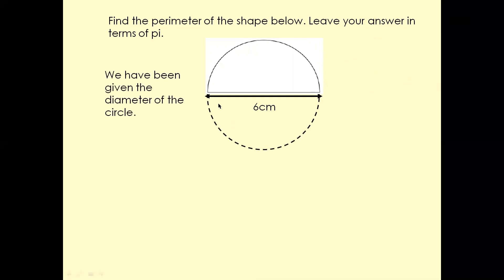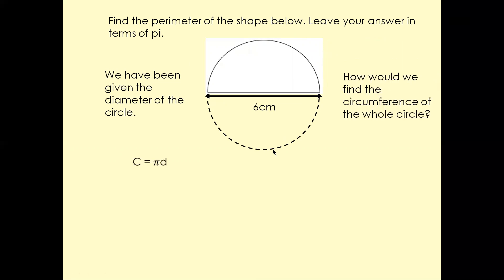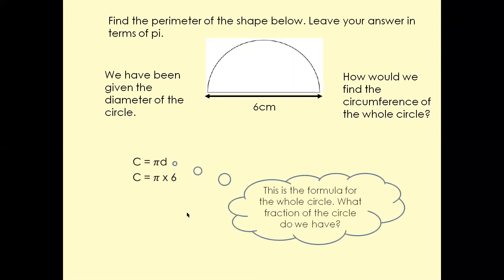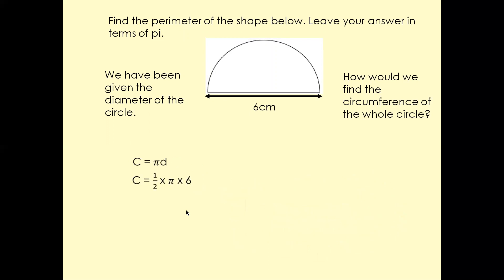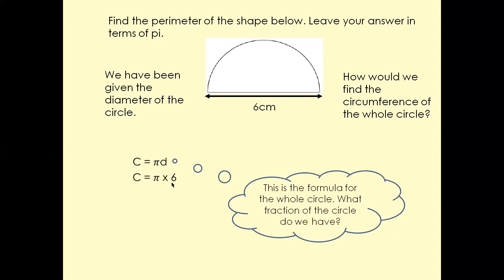Now we have been given the diameter of a circle. The formula to calculate the circumference of a circle is c equals pi times d. The diameter is 6 cm, so the answer is going to be 6 pi. Now remember, 6 pi is the circumference of the whole circle.